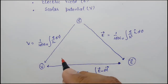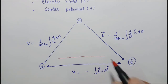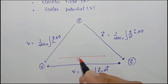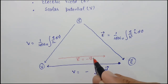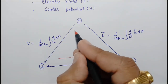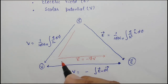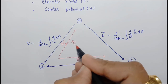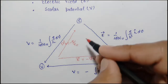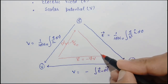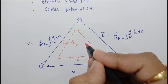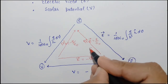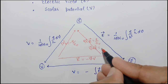Similarly, here we have differential relations, which we represent with the help of red color. In between E and V, we have E equals minus ∇V. In between rho and V, we have ∇²V equals minus ρ/ε₀. And in between rho and E, we have ∇×E equals 0.